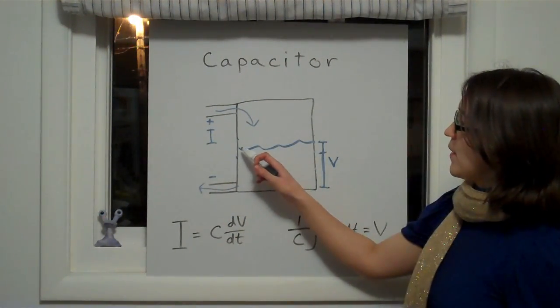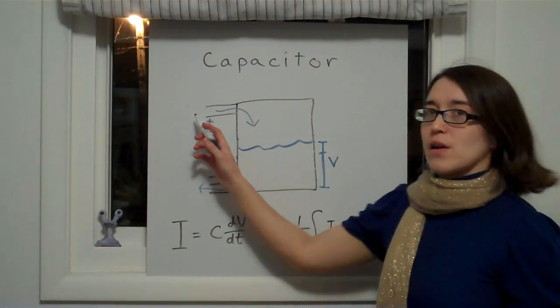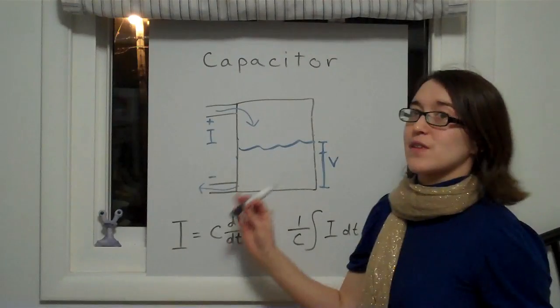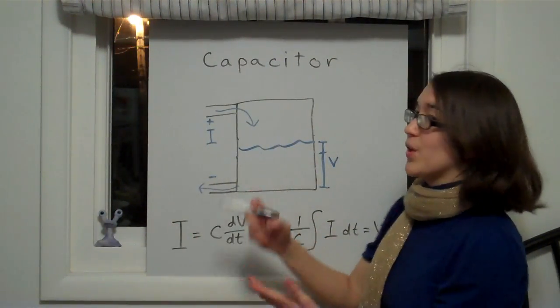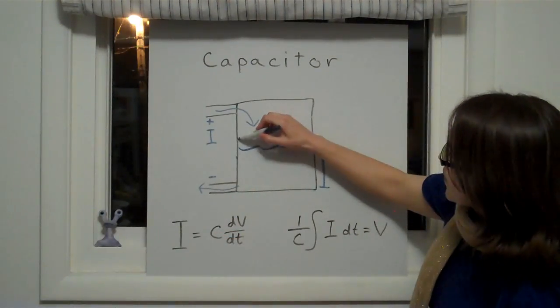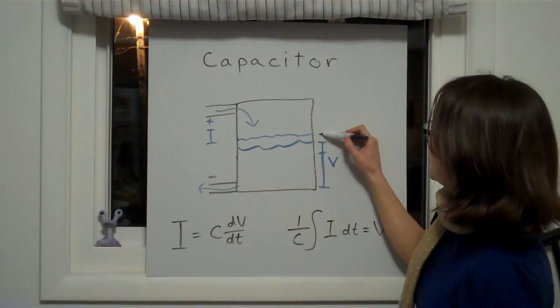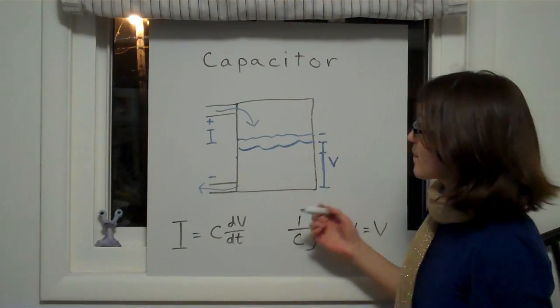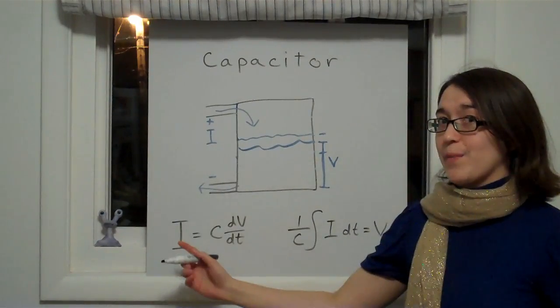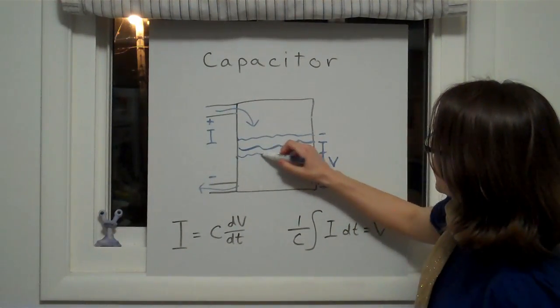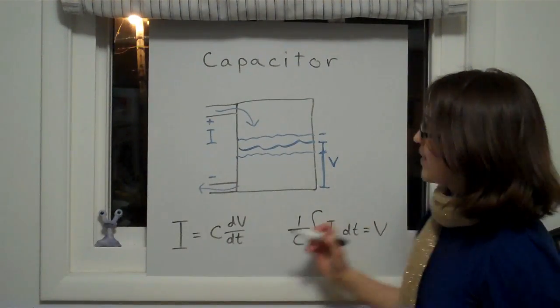The water level can be thought of as a voltage, and the current can be thought of as water going into the bucket or out of it. If we put water into the bucket, like putting current into a capacitor, we'd see that the water level would rise, which is equivalent to the voltage level increasing. And the same thing happens if we take water out of the bucket, or current out of the capacitor: the water level will lower, and the voltage will lower.